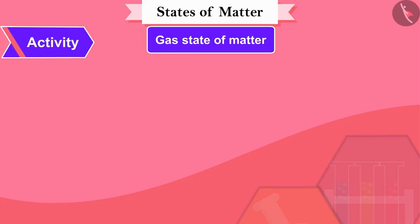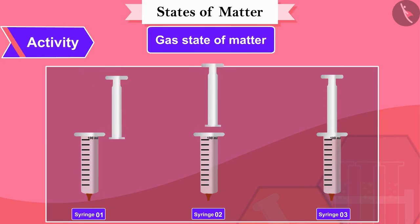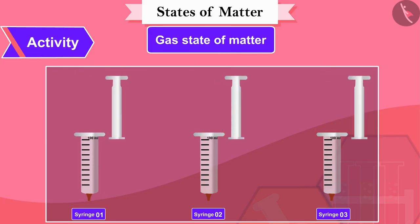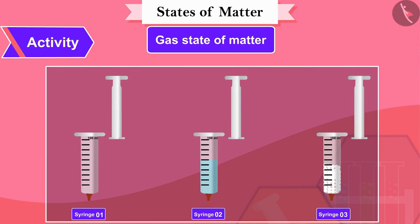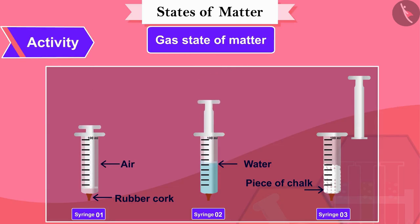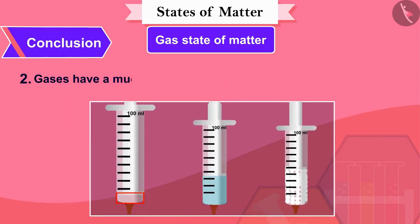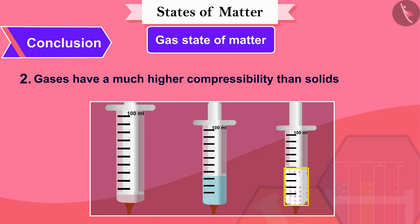Let's do an activity. Take three syringes of 100 ml and close their ends with a rubber cork. Fill air in the first syringe, water in the second, and a piece of chalk in the third. Now try to compress all three pistons by putting them into the syringes. You can see that the first piston was most easily compressed. From this activity, we can conclude that gases have a much higher compressibility than solids and liquids.